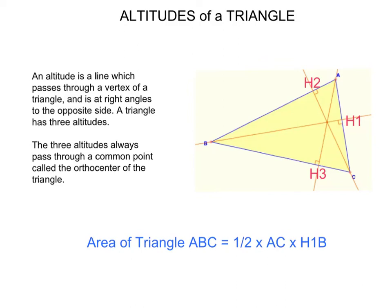This is a short tutorial about the geometry of the triangle. The first feature we'll talk about is the altitude. An altitude is a line which passes through a vertex of a triangle and is at right angles to the opposite side.